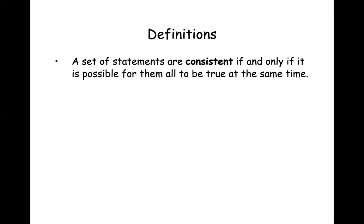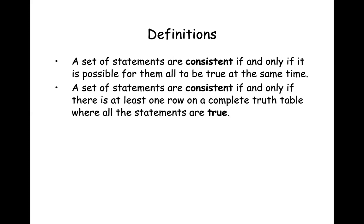A set of statements is consistent if and only if it is possible for them all to be true at the same time. Another way we can put that is to say that a set of statements is consistent if and only if there is at least one row on a complete truth table where all the statements are true.